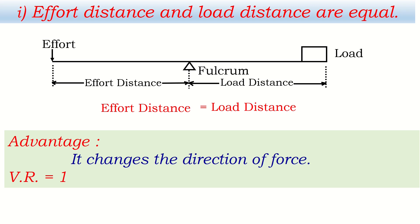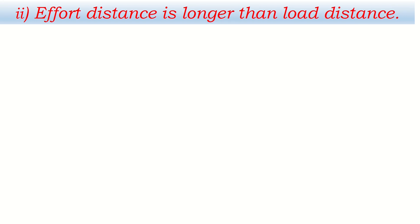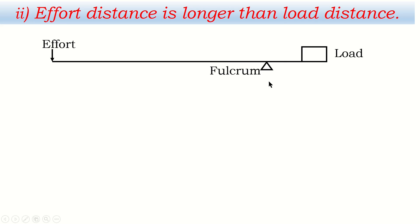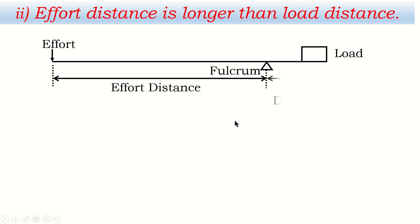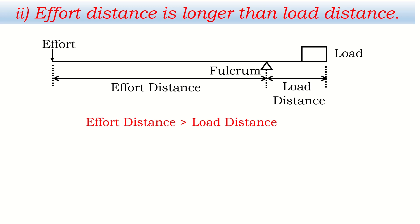The second condition is when effort distance is longer than load distance. In a first class lever, if the fulcrum is taken near to the load, then the effort distance becomes longer and the load distance becomes shorter. This is the condition in which effort distance is greater than load distance.